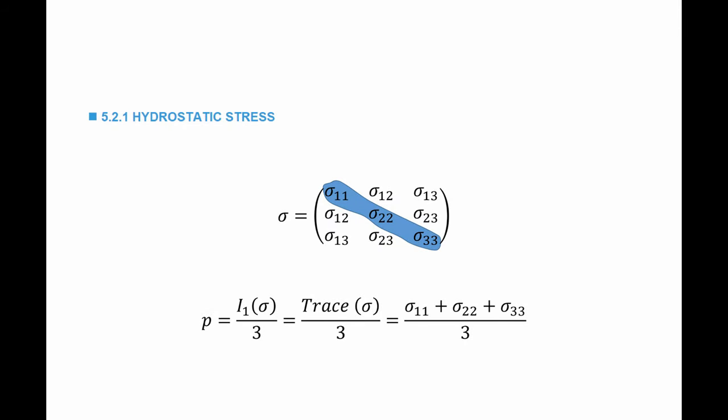Given a Cauchy stress tensor, the hydrostatic stress is the average normal stress. It's equal to the trace of the stress matrix — sigma_11 plus sigma_22 plus sigma_33 divided by 3. Remember that the trace, or the first invariant of the stress matrix, does not change if we change the coordinate system. This quantity is the same independent of what coordinate system we use.